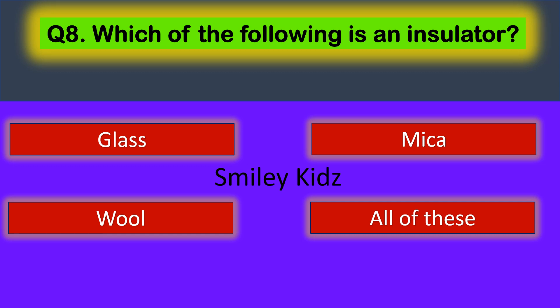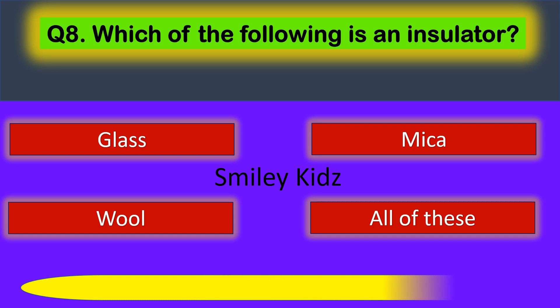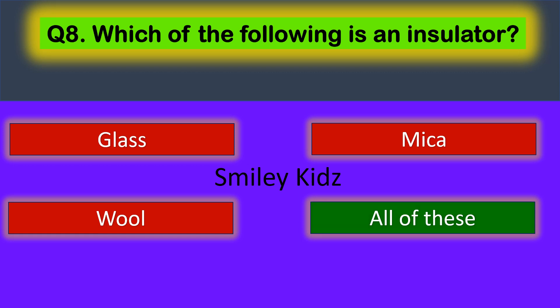Question eight: Which of the following is an insulator? Your options are glass, mica, wool, and all of these. The correct answer is all of these. Glass, mica, and wool are all insulators.